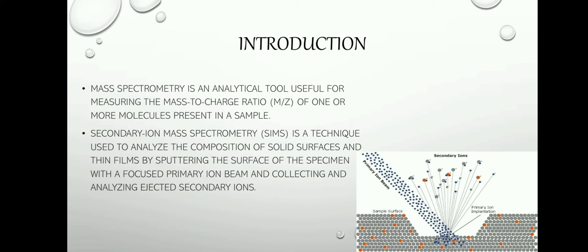Secondary Ion Mass Spectrometry is a technique used to analyze the composition of solid surfaces and thin films by sputtering the surface of the specimen with a focused primary ion beam and collecting and analyzing ejected secondary ions. Here I have shown a diagram which tells about the secondary ion spectrometer.